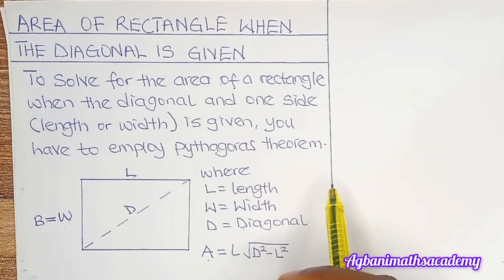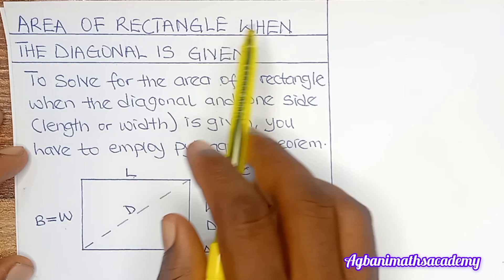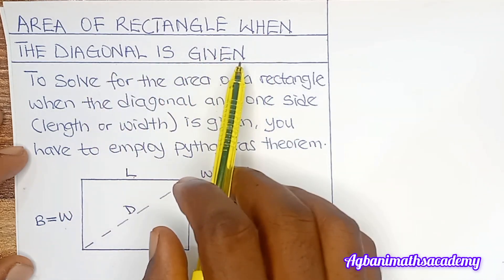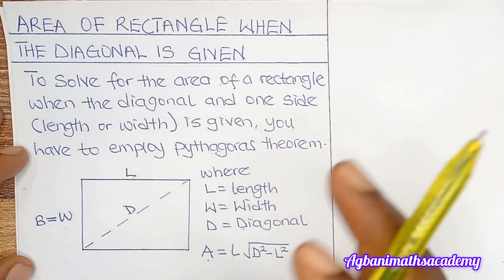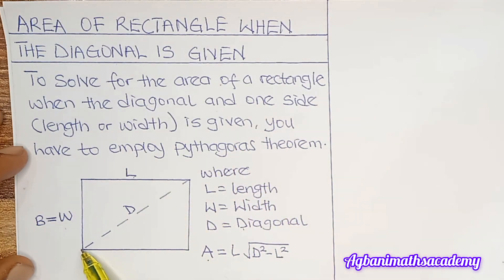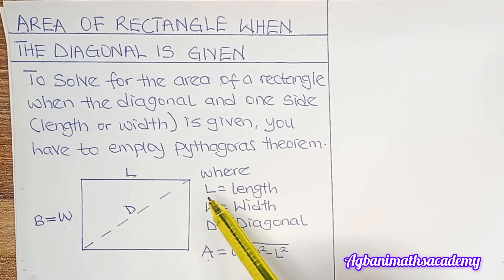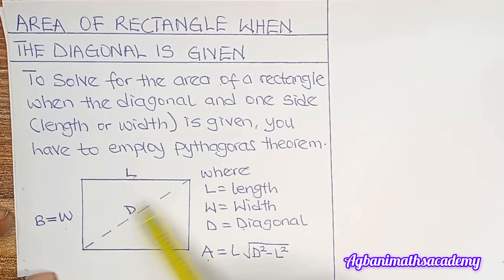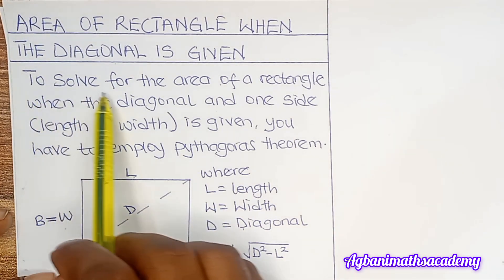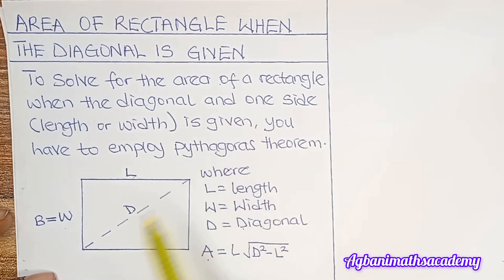Welcome to this video lesson. We are looking at how to calculate the area of a rectangle when the diagonal is given. First, we need to ask: what is a diagonal of a rectangle? A diagonal is a line drawn from one corner of the rectangle to the opposite corner. A rectangle basically has two diagonals — from one angle to the opposite angle, and from the other angle to its opposite.